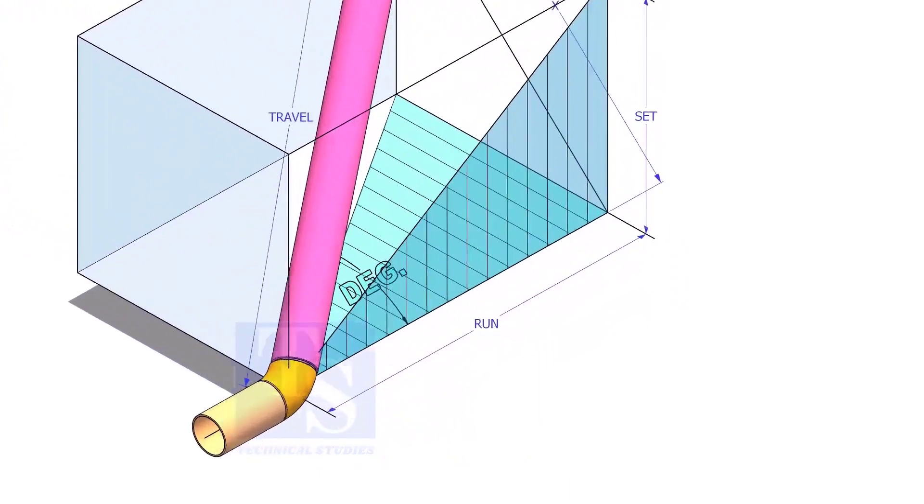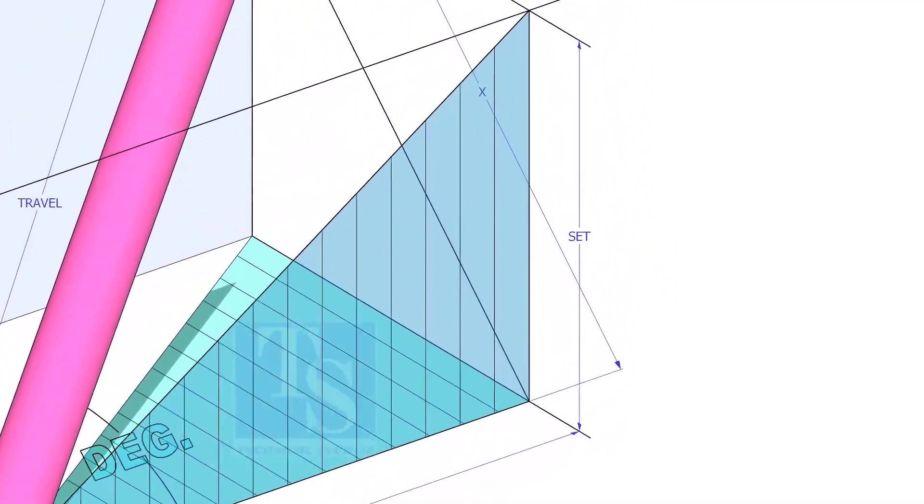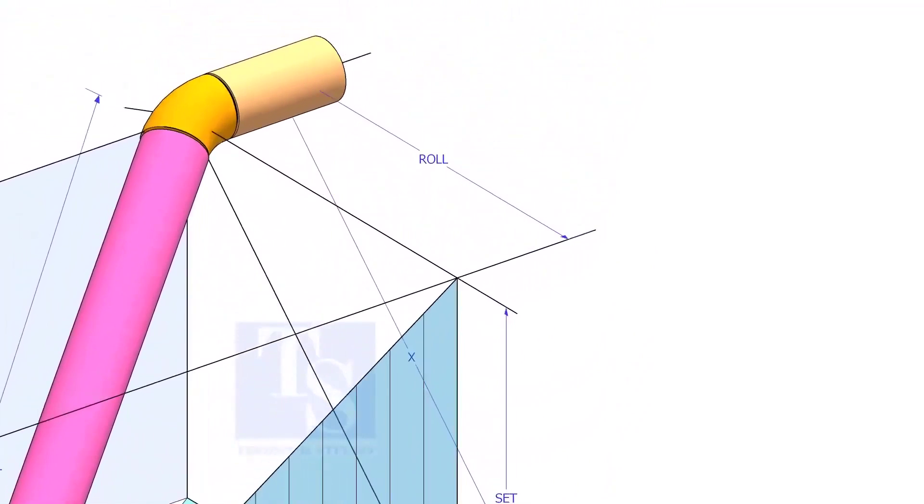In this video, I will show you how to calculate the travel length and the including angle of a double rolled offset pipe.